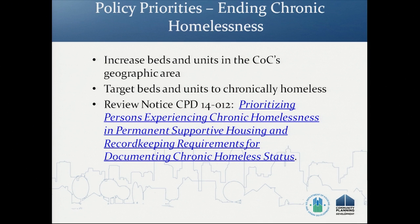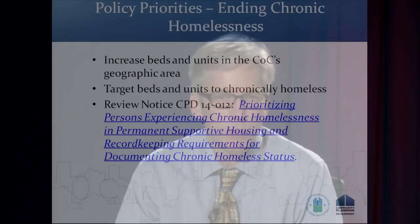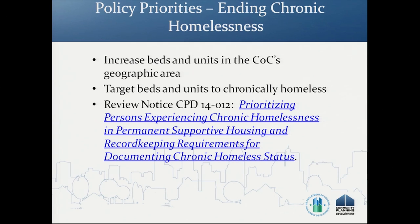Regarding the priority for chronic homelessness, HUD encourages Continuums of Care to create new projects through reallocation or a permanent housing bonus to exclusively serve people experiencing chronic homelessness, including individuals, youth, or families. Individuals and families experiencing chronic homelessness should be given priority for any permanent supportive housing not currently dedicated to this population as vacancies become available. We also strongly encourage COCs and projects to review Notice CPD 14-012, which contains valuable information about how prioritization works and what to do once your geographic area has significantly reduced chronic homelessness.